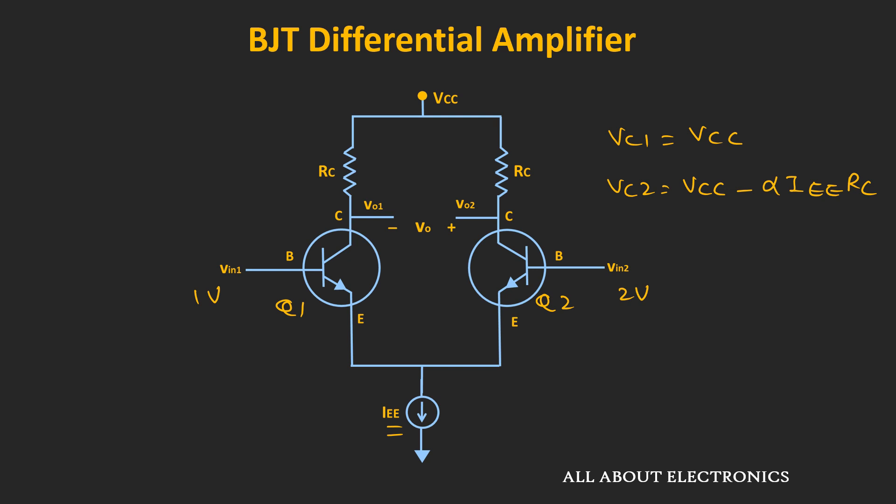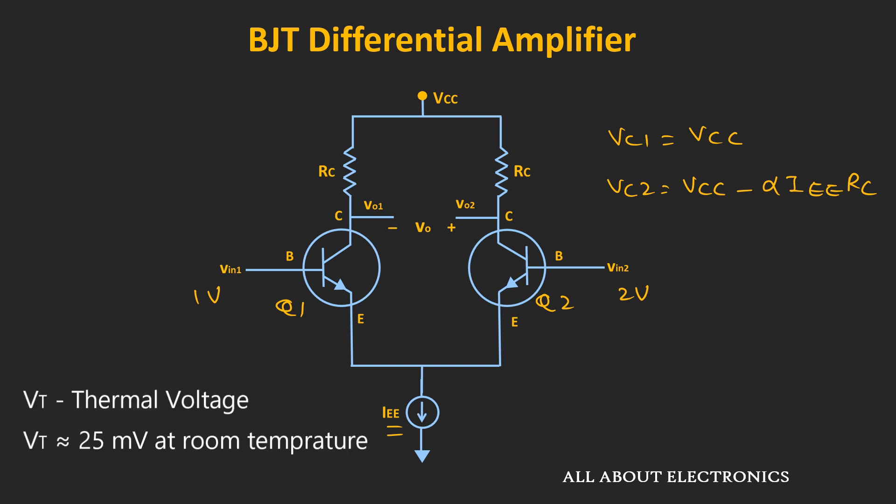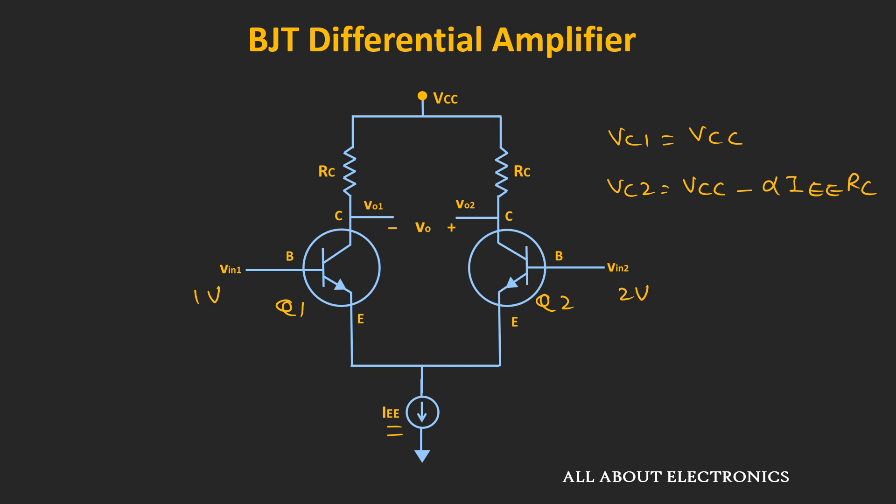But to use this differential pair as an amplifier, the differential input voltage should be very small — typically less than 2VT. That means whenever the differential input voltage is in the millivolt range, it is possible to use it as a differential amplifier. Let's understand qualitatively how the circuit works for this small differential input.